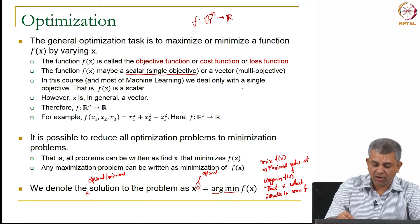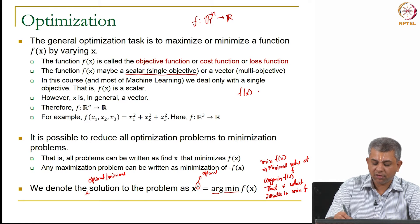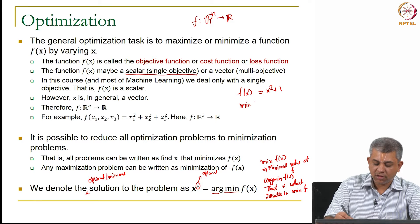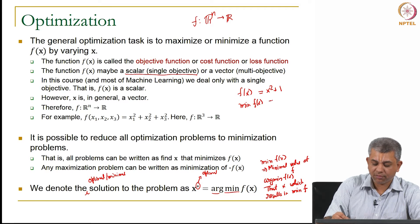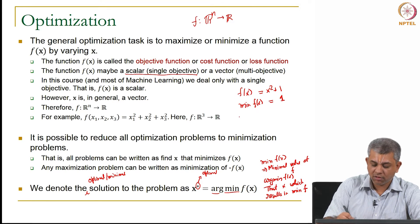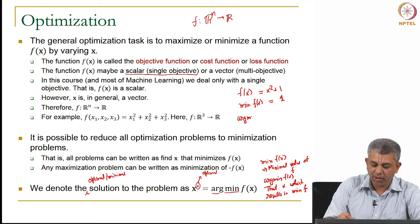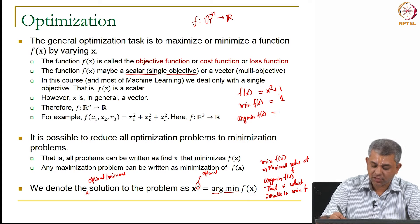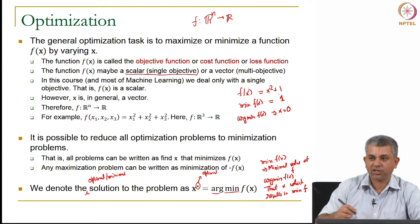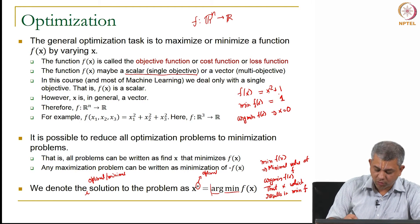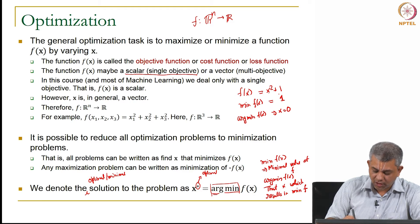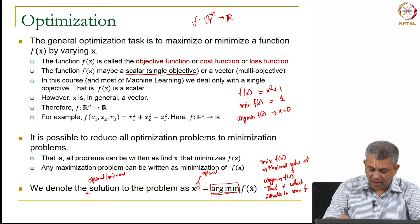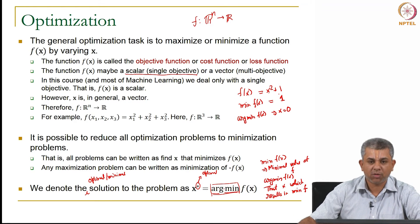Arg min of f of x is that x which results in minimum of f. So just to give you an example, if f of x is let's say x squared plus 1, then minimum of f is 1, but arg minimum of f is what value of x gave you the value of f equal to 1? This is x equal to 0. So we will be using this notation quite often. Arg min is that argument or that value of x which gives us minimum of f of x.